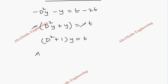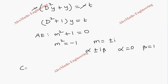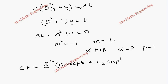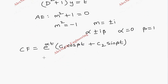For solving this, we write the auxiliary equation: m squared plus 1 equal to 0. From this, m squared equals minus 1, so m equals plus or minus i. This is of the form alpha plus or minus i·beta. By comparison, alpha is 0 and beta is 1. The complementary function is e to the power alpha·t times (c1·cos(beta·t) plus c2·sin(beta·t)), written in terms of t. Substituting alpha equals 0, we get CF equals c1·cos(t) plus c2·sin(t).